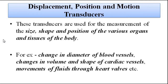These transducers are of diagnostic significance — they are used to pinpoint a medical anomaly. For example, measurements include change in the diameter of blood vessels, changes in the volume and shape of the cardiac vessels, movement of fluids or blood in the body, various body parts such as movement of fluids through heart valves, and many other things. This is best known to people with a medical background.